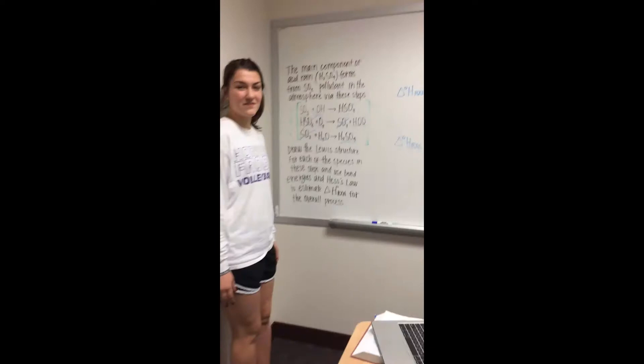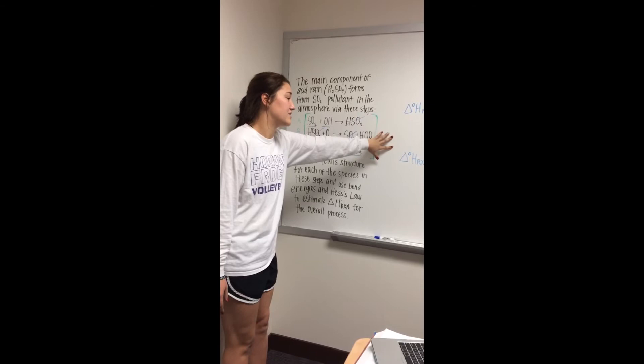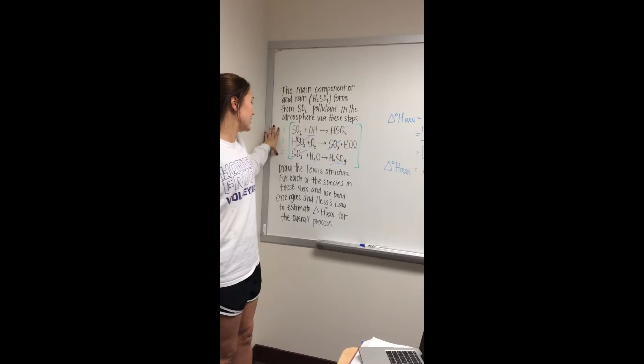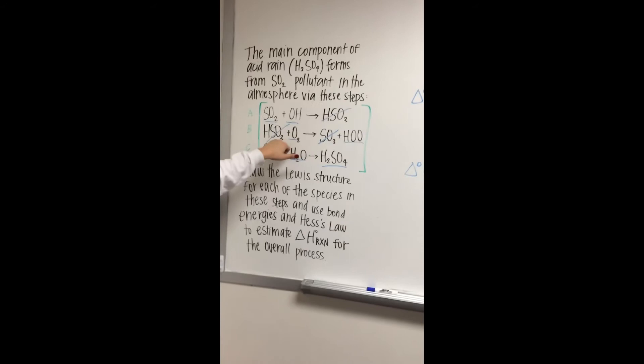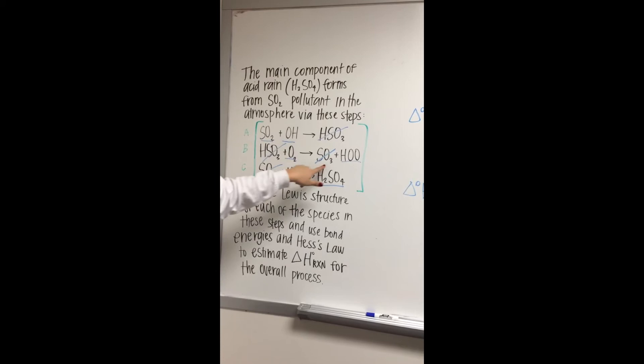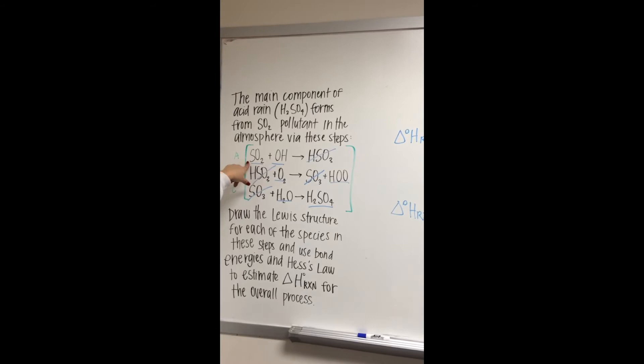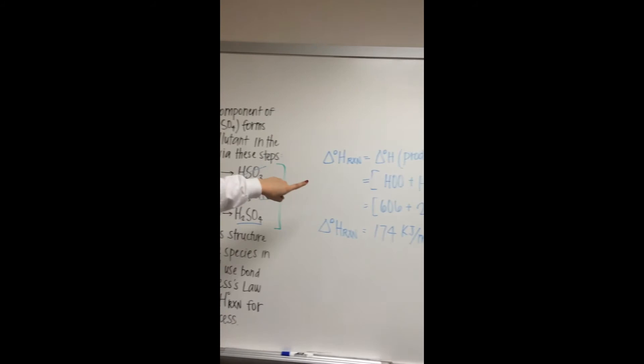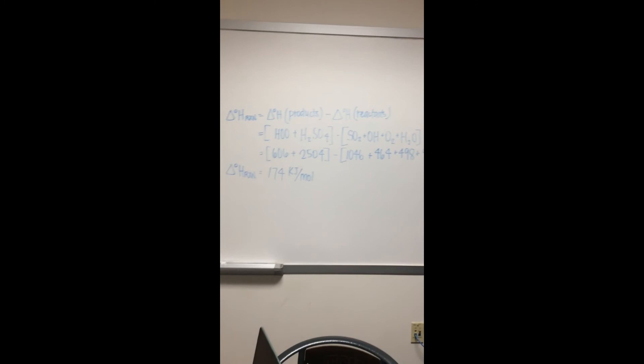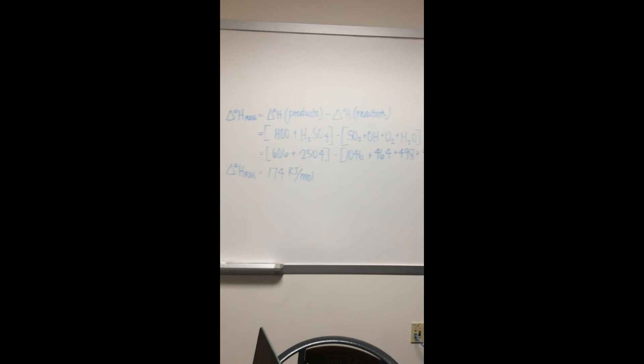And in step three, much the same. So in the final step, we're going to use Hess's Law to estimate the change in enthalpy of the reaction. We're going to go back to our given and look and see that we have HSO3 on the product side and the reactants, so we can cancel those out since they have the same bond energy. And then we're also going to find that SO3 is on the reactant side and the products, and we're also going to cancel those out. So then we're going to look at what we have left in the reactants. We have SO2 plus OH plus O2 plus H2O, and we're going to see what bond energies we already found. We also have HOO and H2SO4 left on the products. So we're going to subtract the reactant bond energies from the products and solve for the final change in enthalpy of the reaction.